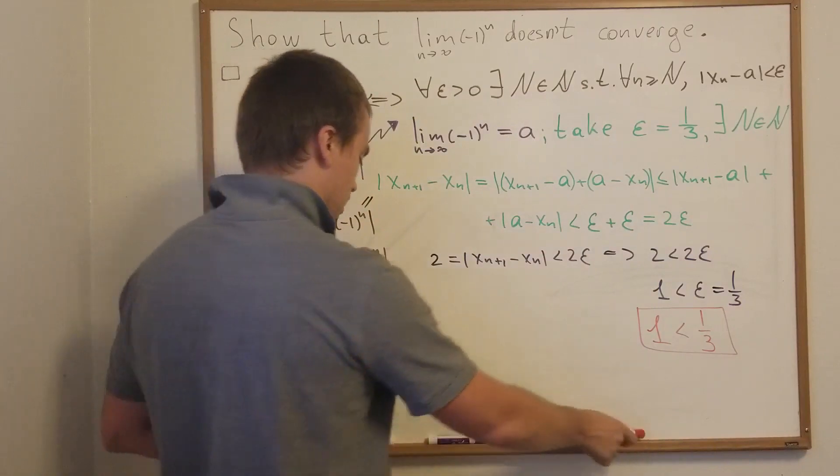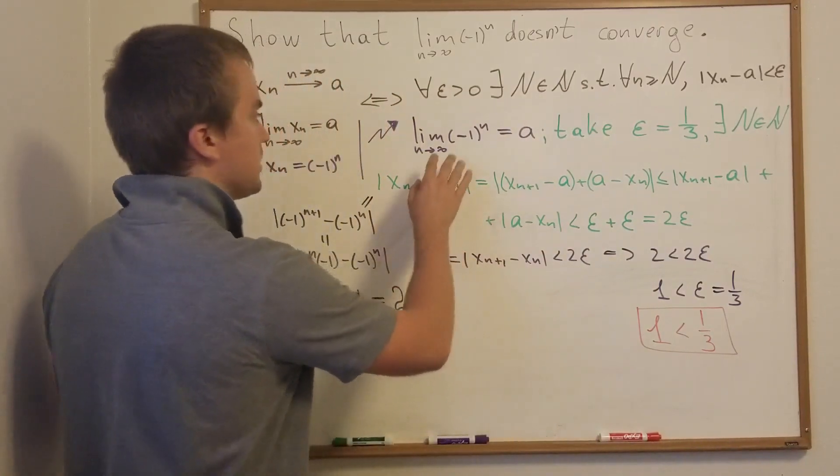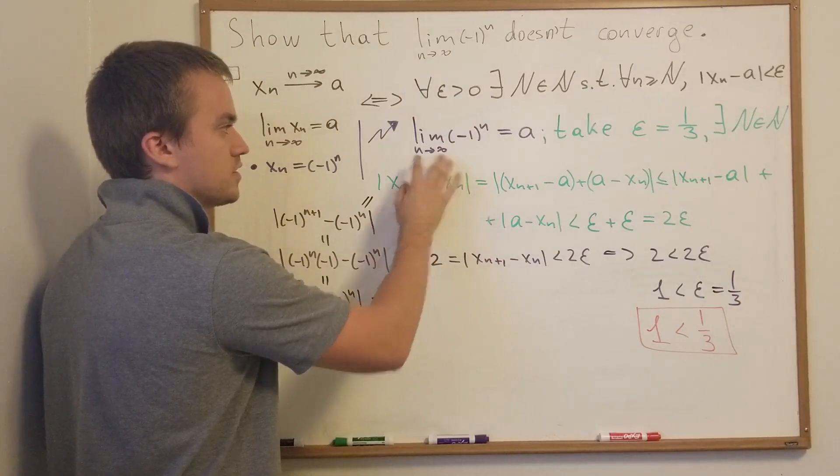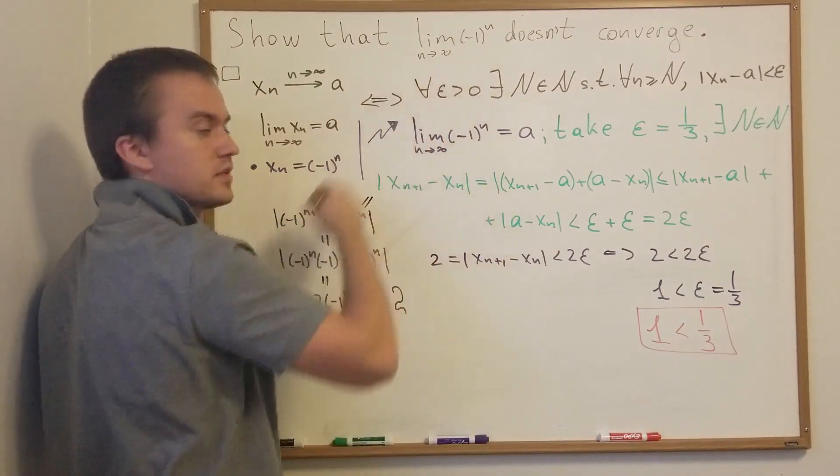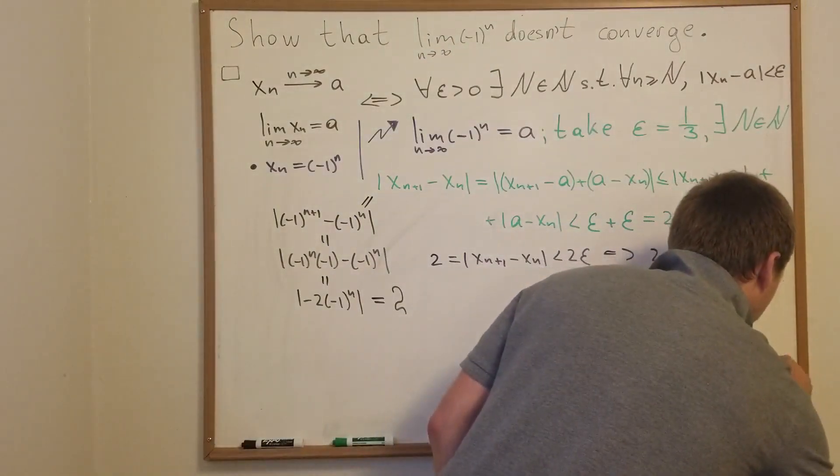So our assumption that this limit exists is false. The original statement that this limit doesn't converge or doesn't exist is true. And our proof is done.